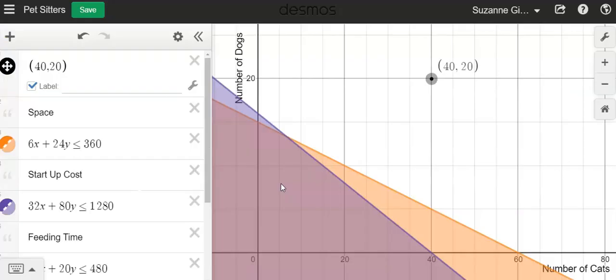So for this graph, remember Carlos and Clarita are wanting to have a business where they board cats and dogs. The first two constraints that we dealt with was the amount of space that they had and their startup costs.